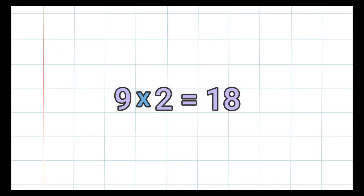The number sentence on the screen shows us that 9 times 2 equals 18. The symbol in between the 9 and the 2 is a multiplication symbol. It can also be shown as a center dot. Both tell us that we need to multiply.